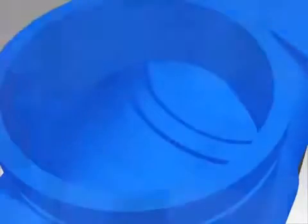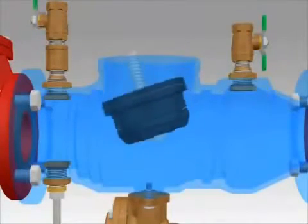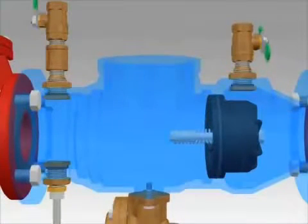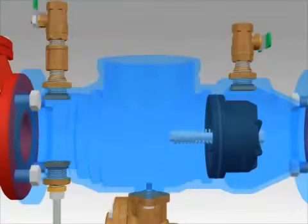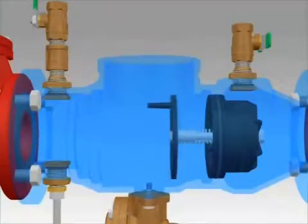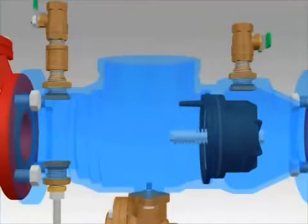After servicing the number 2 check, install it in the body making sure it is completely seated. The groove for the seat retainer should be completely exposed. Close the number 4 test cock to hold the check in place. Install the plastic retainer by inserting one end into the body groove and then sliding your hand around the face of the retainer, pushing it into the groove as you go.